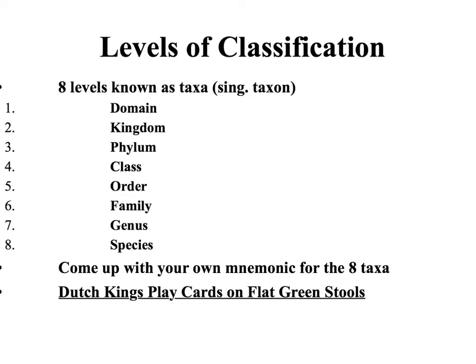Our current classification system has eight levels. We start with domains, the largest categories, which include thousands of types of organisms. Domains are broken down into kingdoms, then phylum, classes, orders, families, genuses, and finally specific species. You should come up with a mnemonic to help remember the order of these eight levels. Here's an example: 'Dutch kings play cards on flat green stools' — using the first letter of each taxon: domain, kingdom, phylum, class, order, family, genus, species.